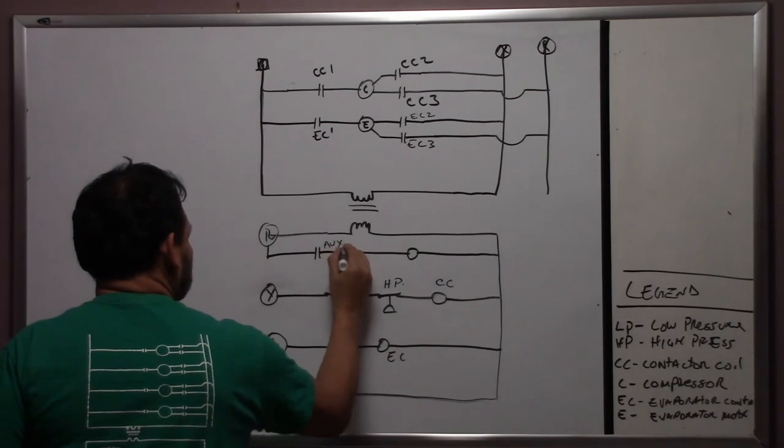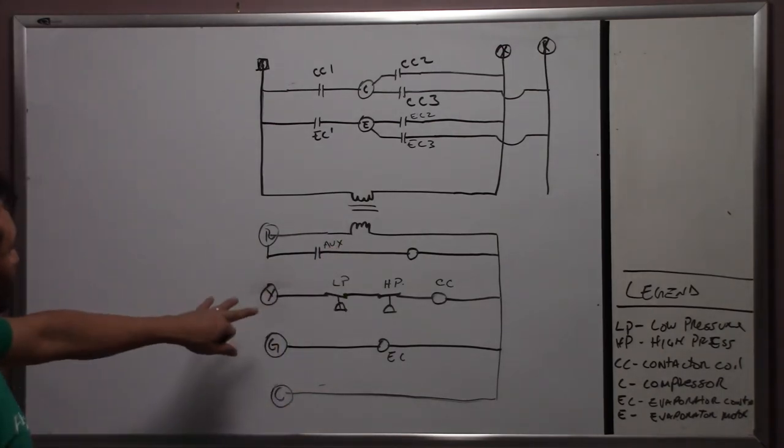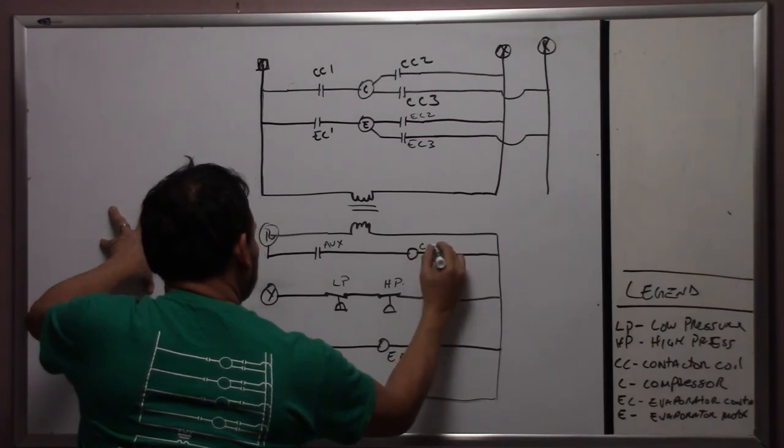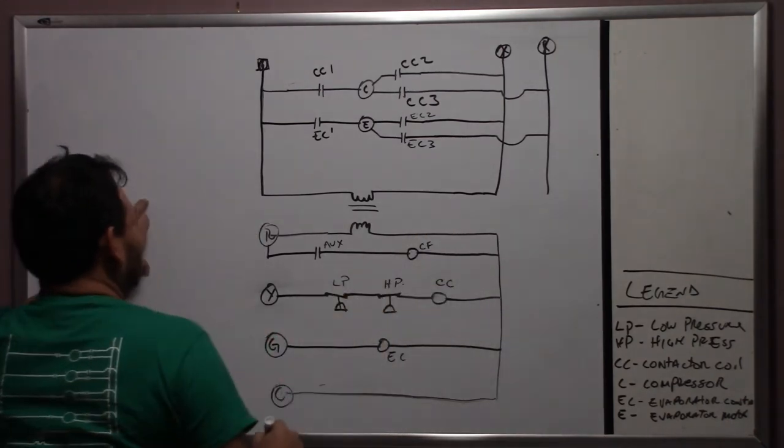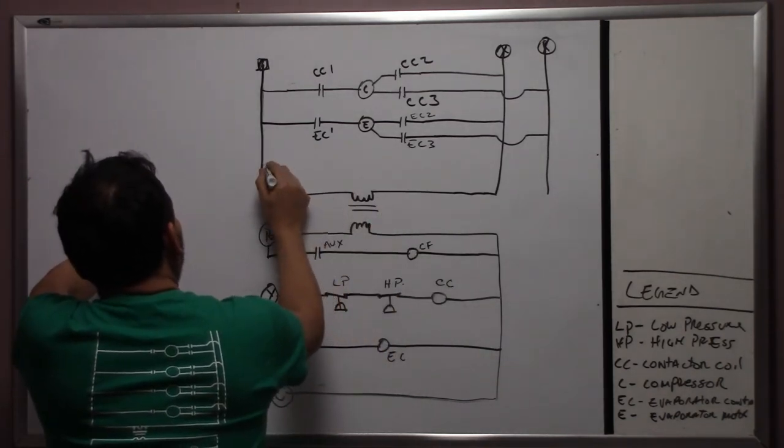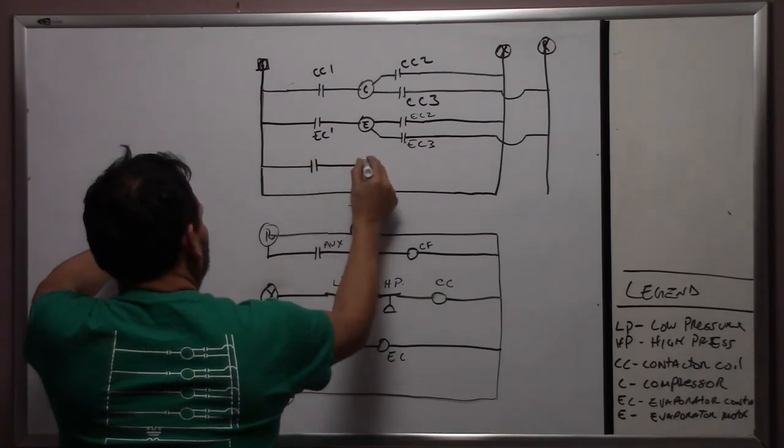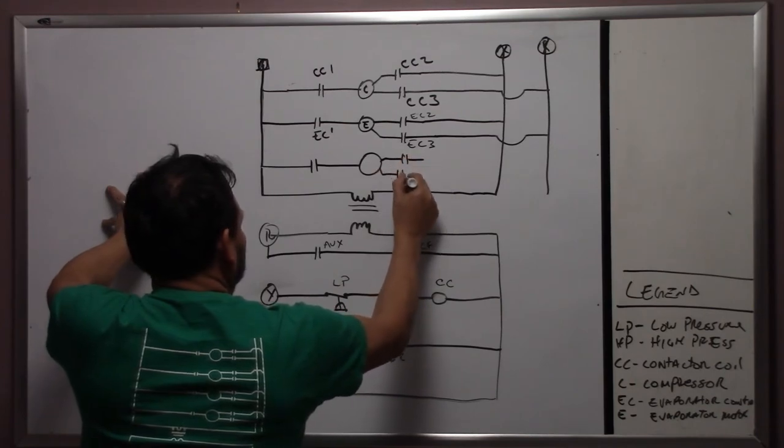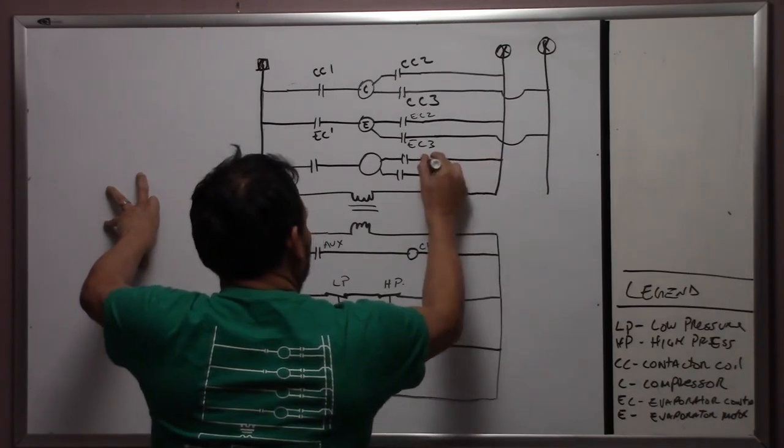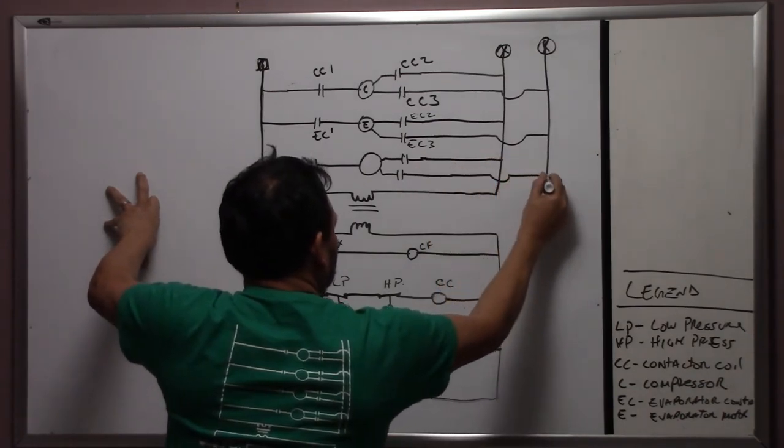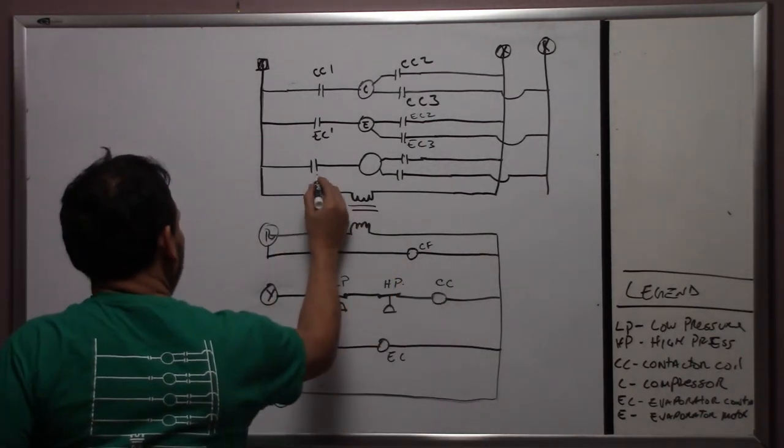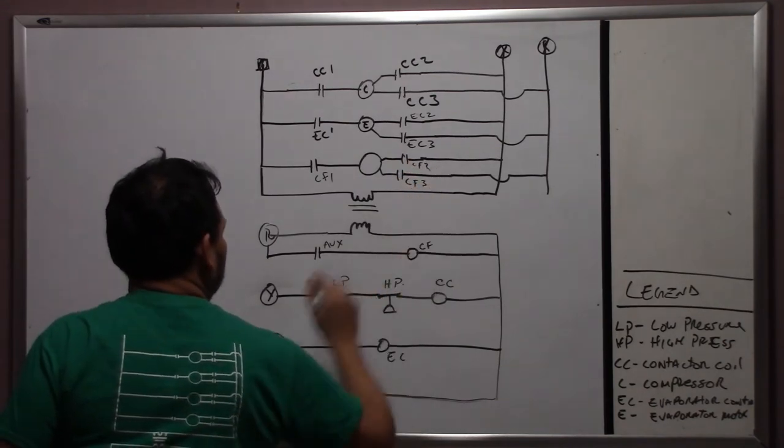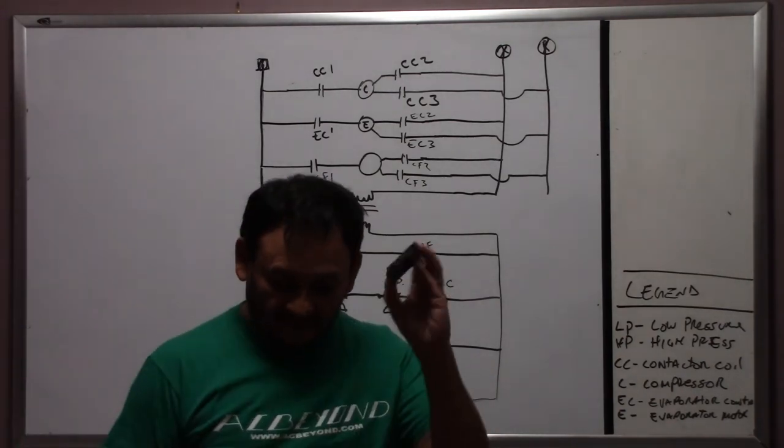Now we know the auxiliary, and this will be your condenser. Let's see, CF on that, condenser fan contactor. So we're going to have something here, we're going to have another one here. This is your condenser fan motor. I talked about it before, this is your auxiliary.